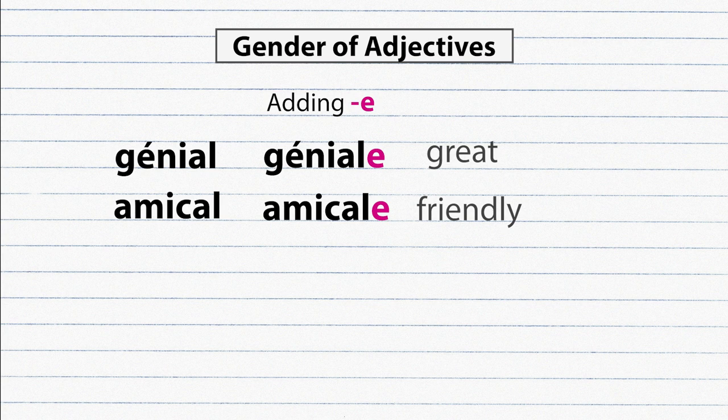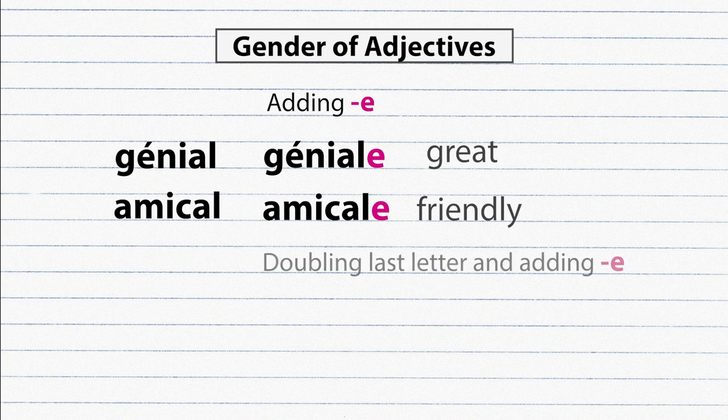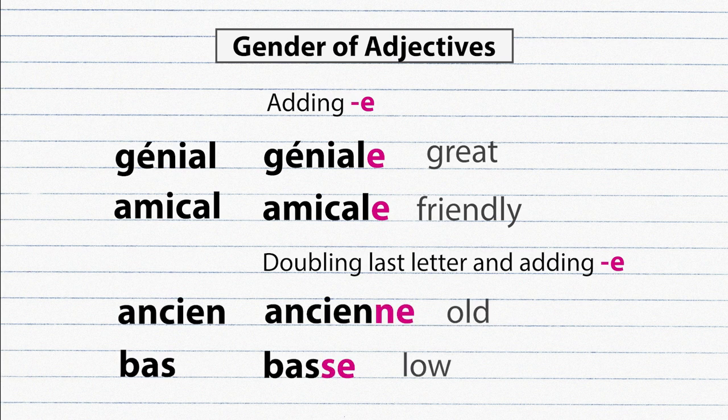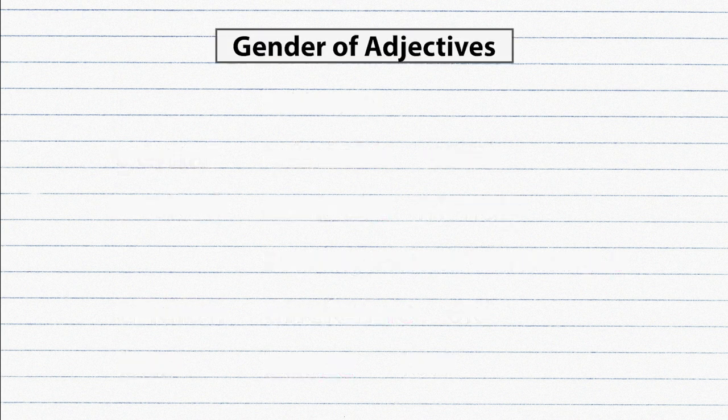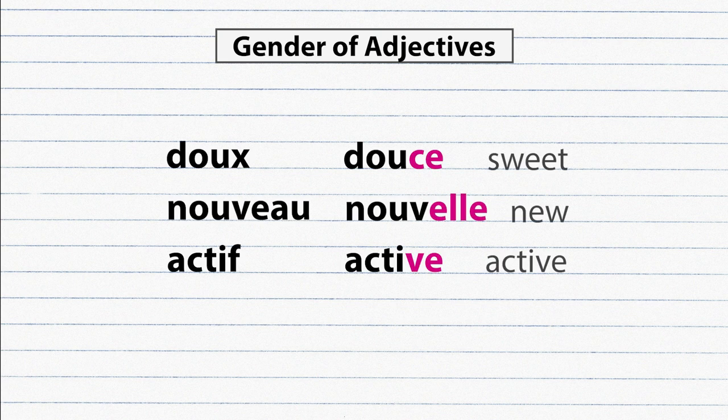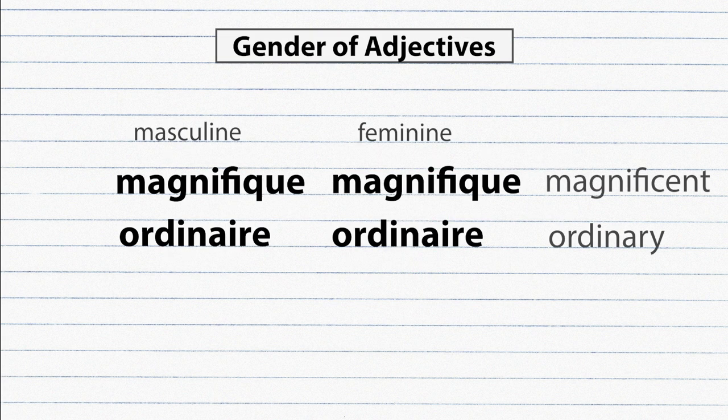Another way is by doubling the final consonant and adding E. Example: ancien, ancienne. Bas, basse. Or by changing the ending but there are many different possible changes depending on the ending. If the adjective already ends with an E in the masculine it stays the same in the feminine form.